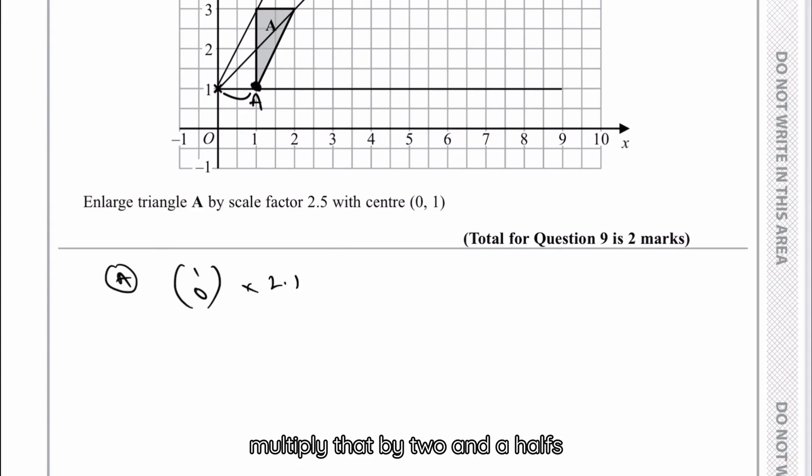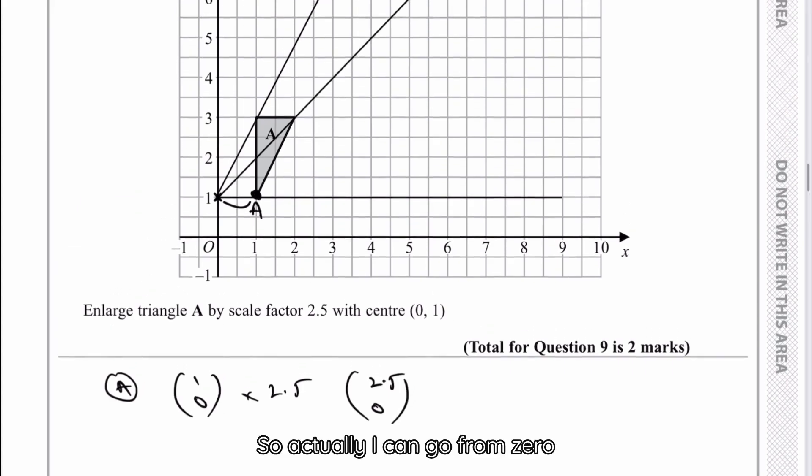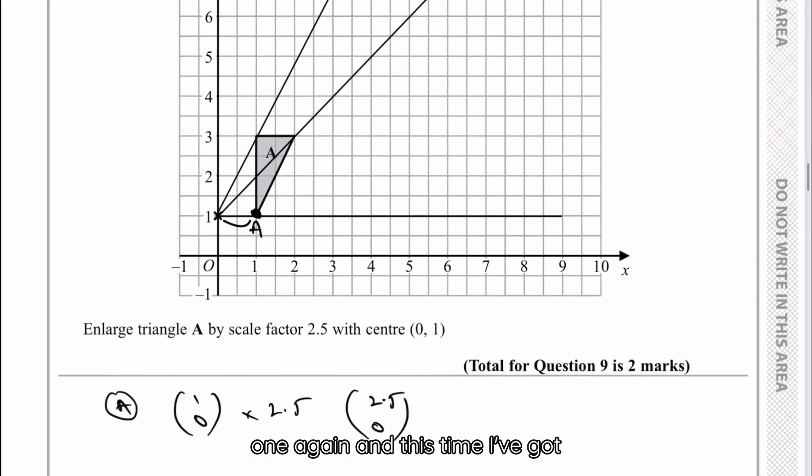To get to A is going to equal to a vector of (1,0). Then I'm going to multiply that by two and a half because I want it two and a half times bigger. So therefore now my new vector will be (2.5,0). So I can go from (0,1) again and this time I've got one jump, two jumps, and half a jump and that's going to put me here, which is my new point for point A.